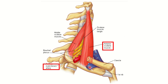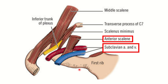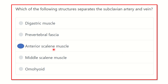The anterior scalene muscle is located between the subclavian vein and the subclavian artery. It is also important to note that the subclavian artery and brachial plexus are located between the anterior scalene and the middle scalene muscle. This picture makes it very clear that the subclavian artery overlies the first rib. So the anterior scalene muscle separates the subclavian artery from the subclavian vein.